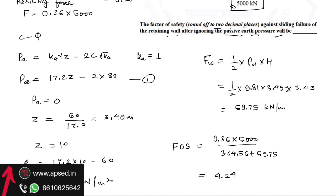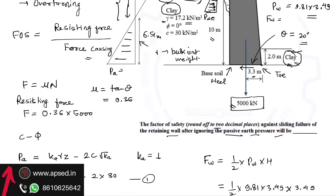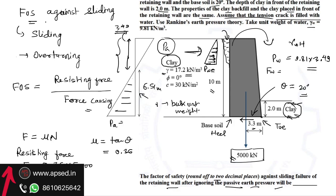The answer rounded to two decimal places is 4.24. The key idea is identifying what forces cause sliding and what forces resist it — the same concept applies to slope stability analysis. For the overturning factor of safety, we consider the moments of these forces, typically calculated about the toe of the retaining wall, so the location of each force also becomes important.